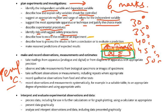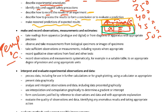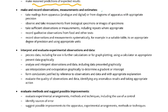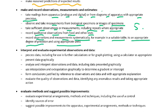Describe how to process the results to form a conclusion or to evaluate a prediction. Make reasonable predictions of expected results. Then make and record observations, measurements and estimates. Take readings from apparatus — analog and digital — or from diagrams of apparatus with appropriate precision. Observe and take measurements from biological specimens or images. Take sufficient observations or measurements, usually five, including repeats where appropriate. Record qualitative observations from food and other tests. Record observations and measurements systematically, for example in a suitable table to an appropriate degree of precision and using appropriate units.